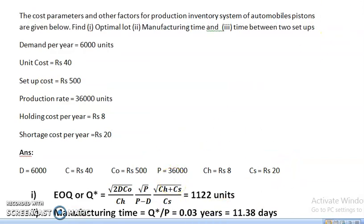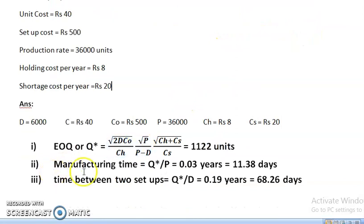The third question is time between two setups. Time between two setups is equal to Q optimal divided by D, which equals 0.19 years or 68.26 days.